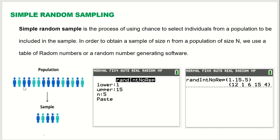For instance, the total number of members in this population is 15 and I want to draw a sample of size 5. In order to do this using the simple random sampling technique, what you do is number the individuals in the population starting at 1, 2, 3, 4, 5 all the way up to 15. Now from here, suppose I want to draw a sample of size 5.